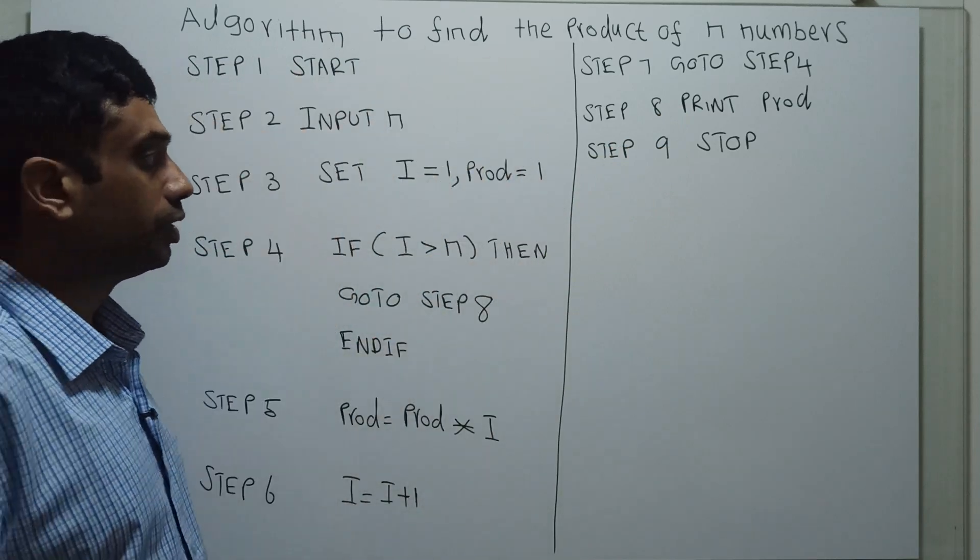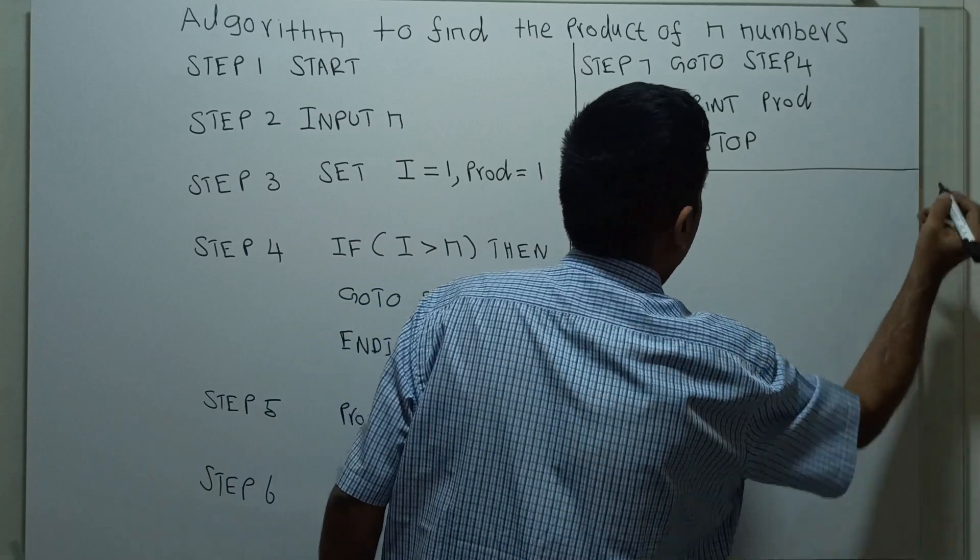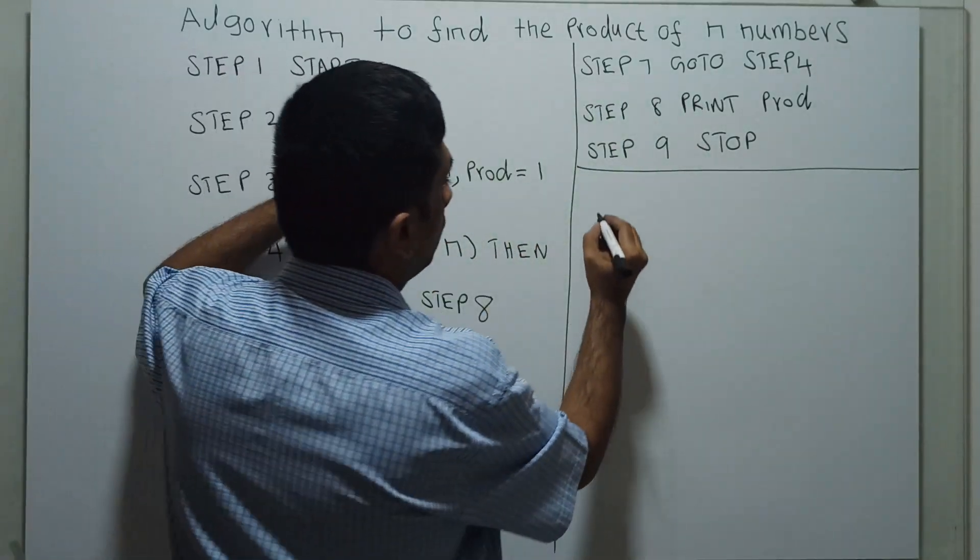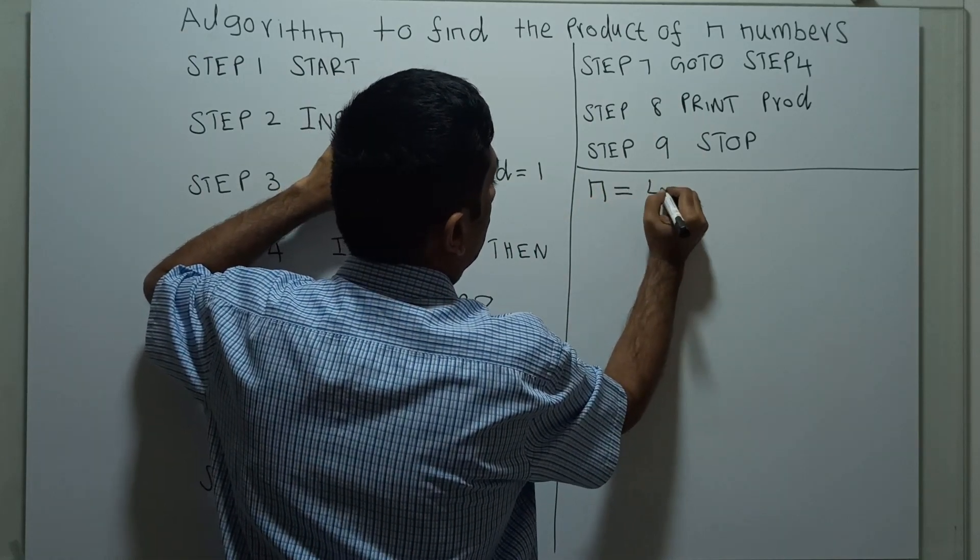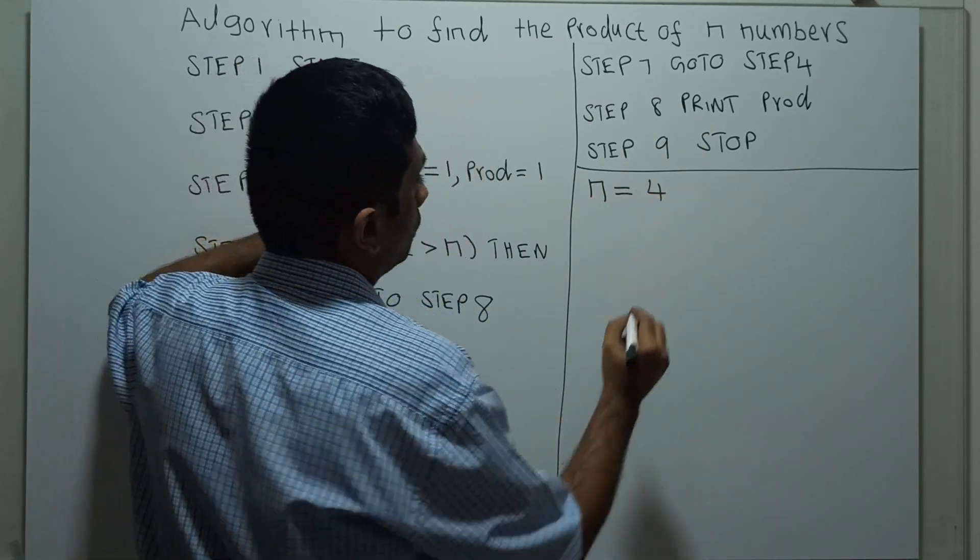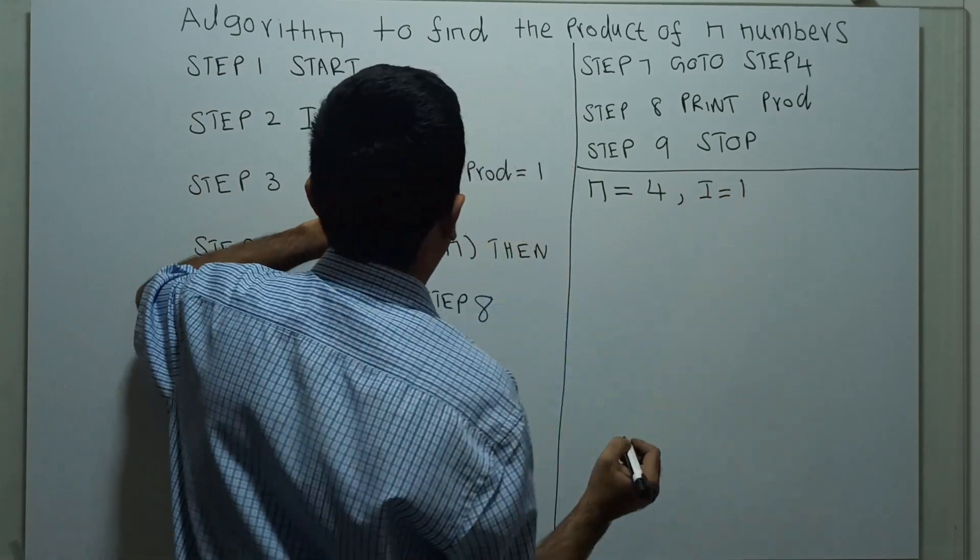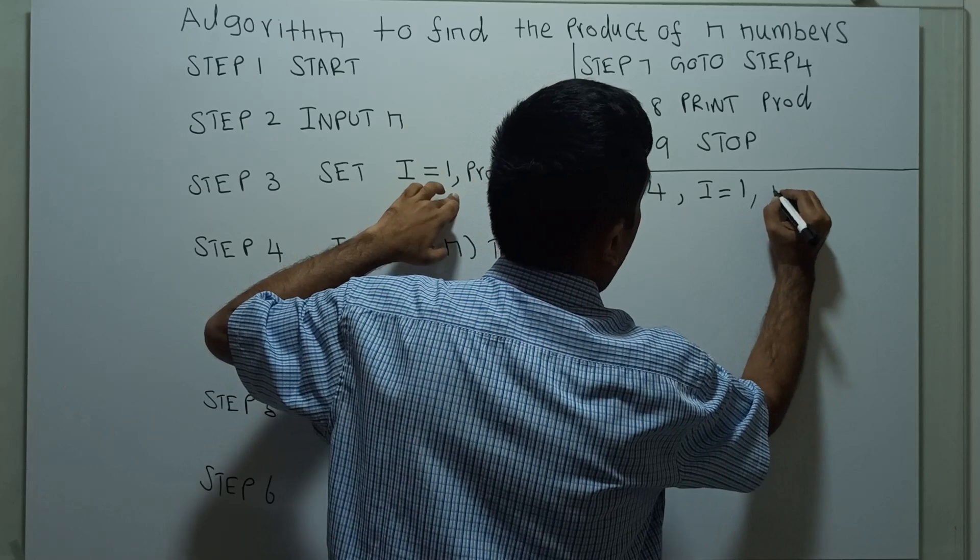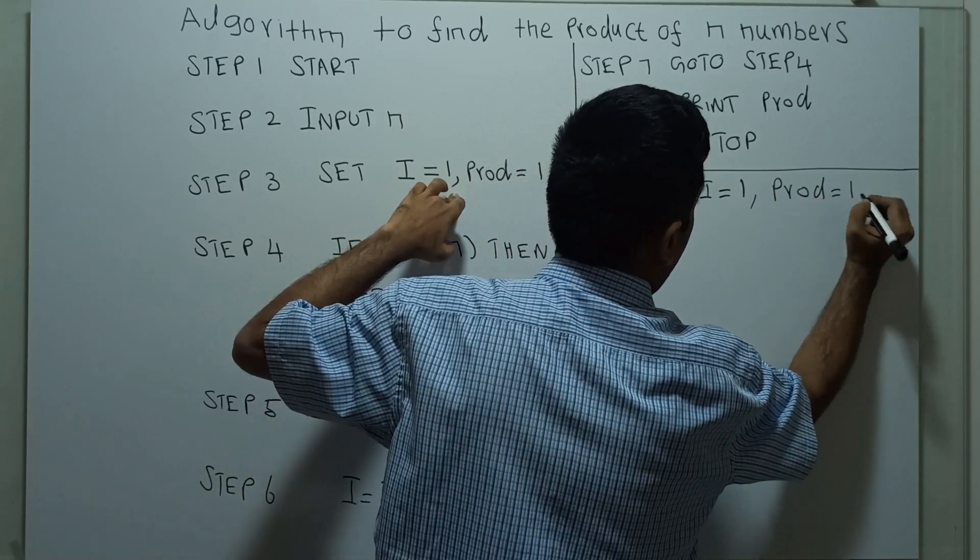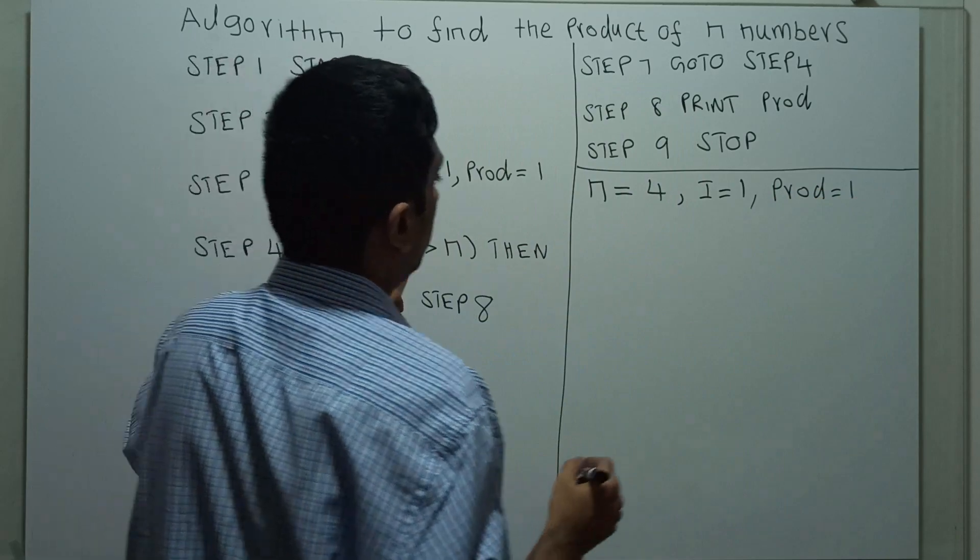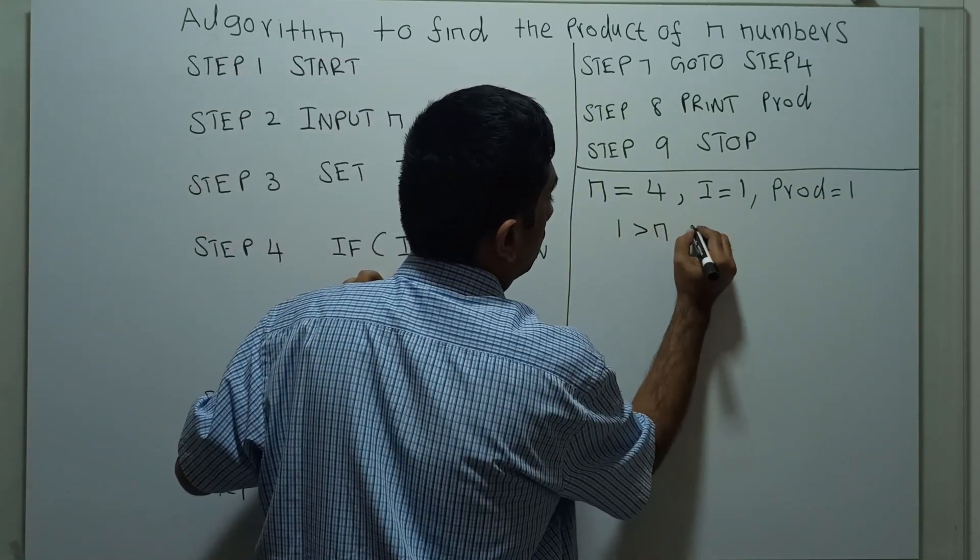Now we will check how this algorithm works. I'm giving the value of n equal to 4. So i is 1, product is 1. Checking if i greater than n: 1 greater than 4, this is